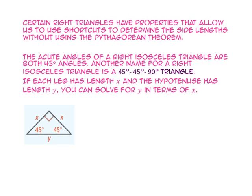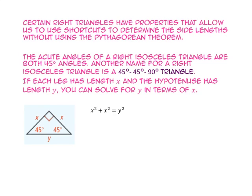If each leg has length x and the hypotenuse has length y, you can solve for y in terms of x. Starting with the Pythagorean theorem, a squared plus b squared equals c squared, substitute x for a and b, and y for c. So x squared plus x squared equals y squared. Combining like terms gives 2x squared equals y squared. Taking the positive square root of both sides, y equals x times the square root of 2.